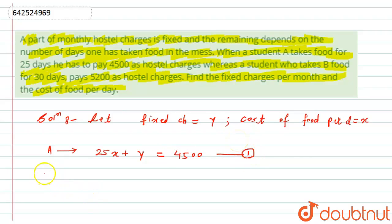Now there is a second student, B, who takes food for 30 days. One day charge is x, so it will become 30x plus he pays fixed charges in the form of y. So this addition equals 5200. Let this be equation number two.